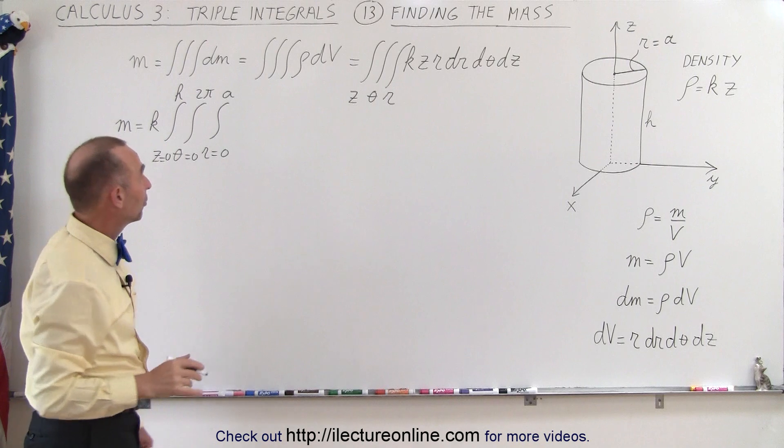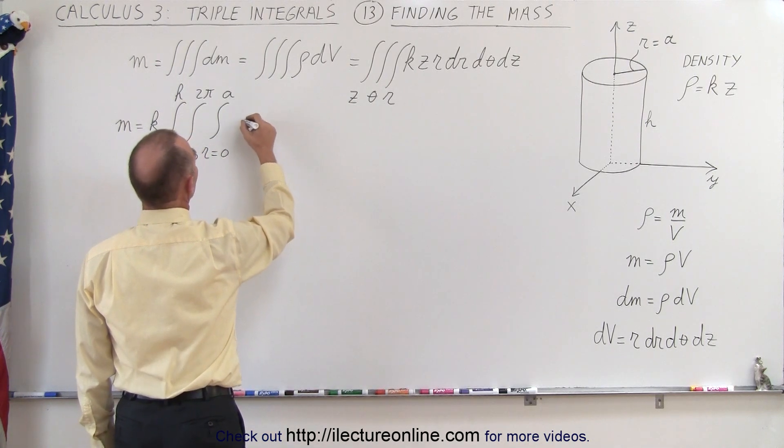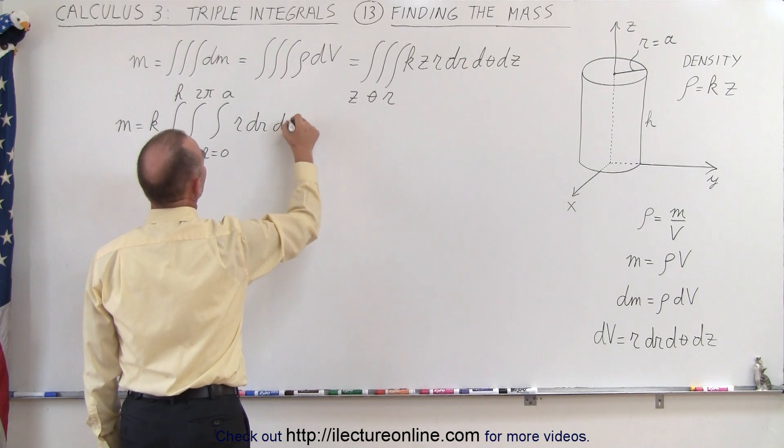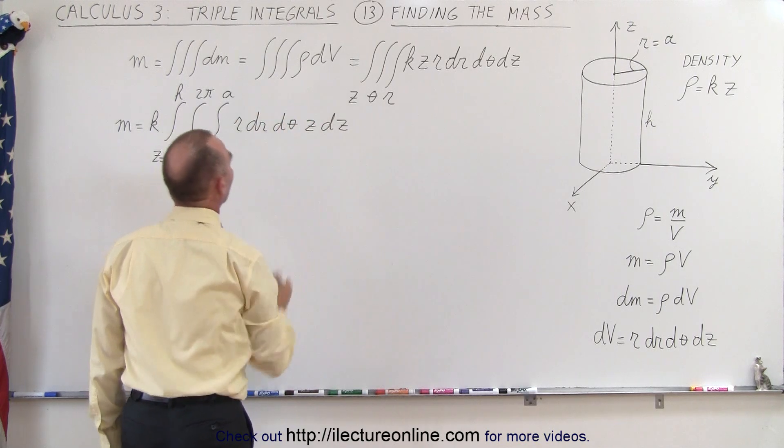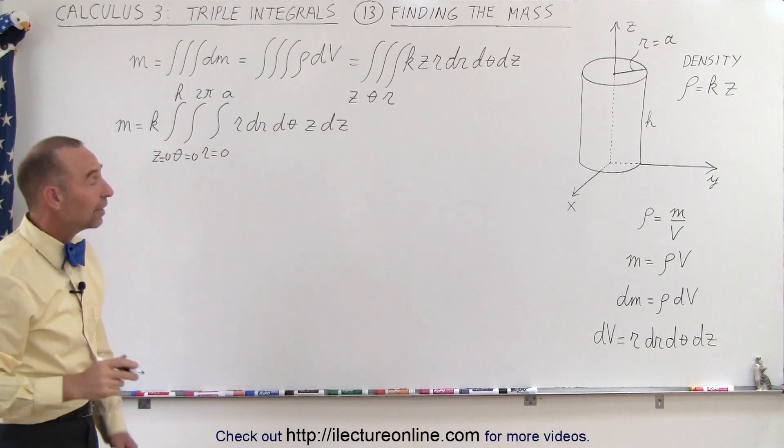All right, now we're ready to put in what we have left. So we have r dr, dθ, and z dz. Okay, I think we're ready now to try to integrate that.